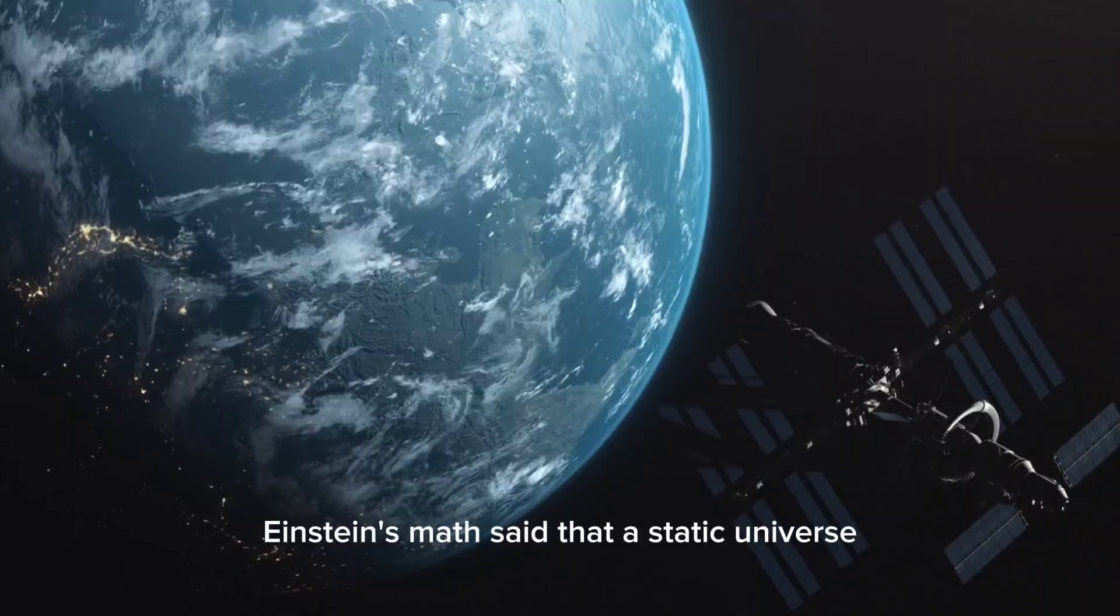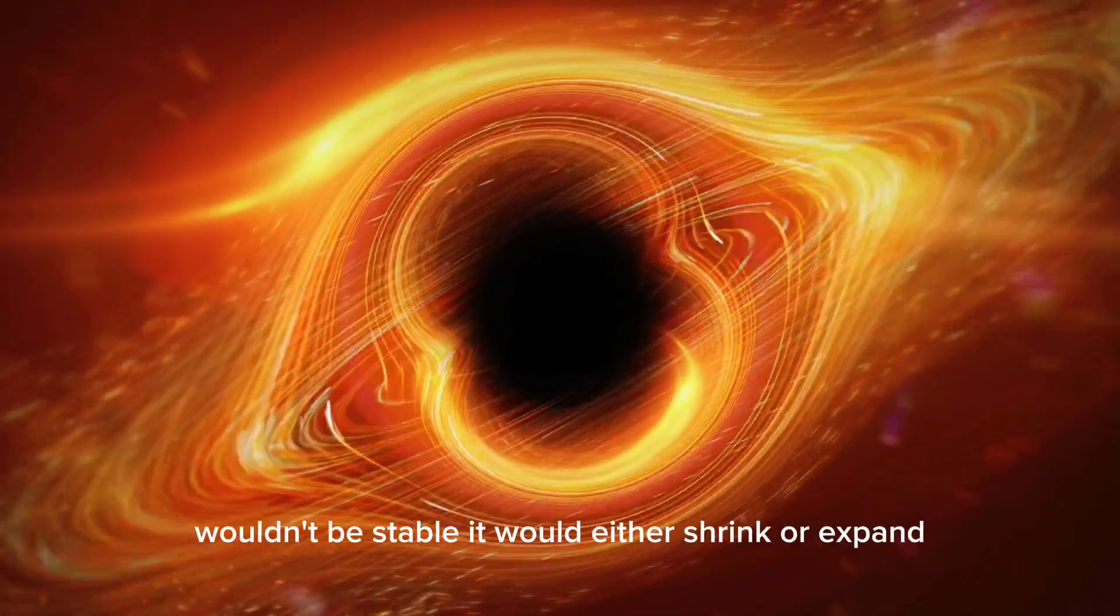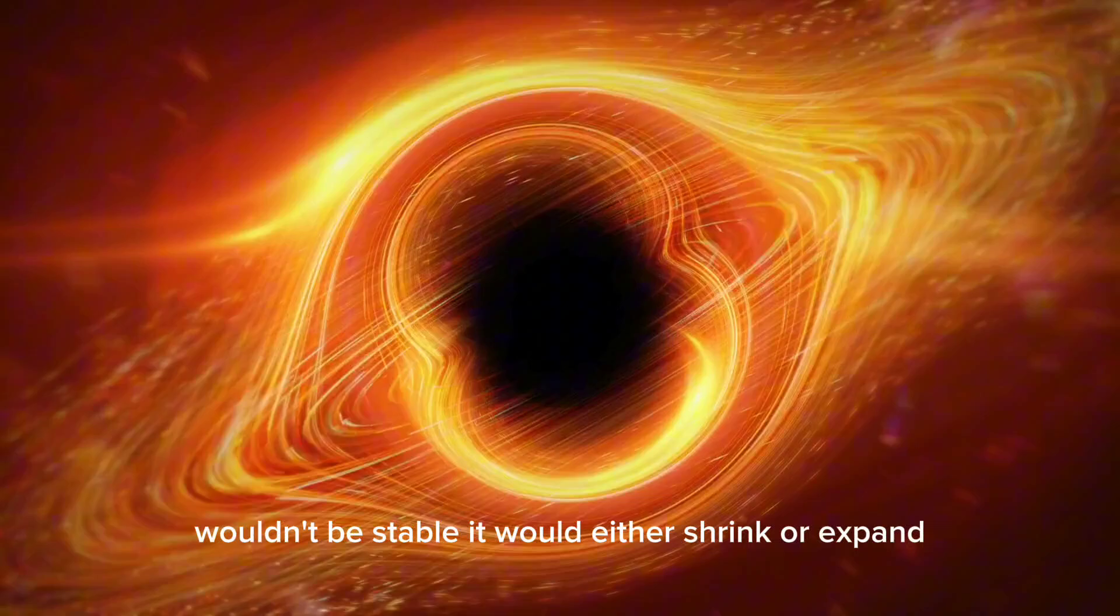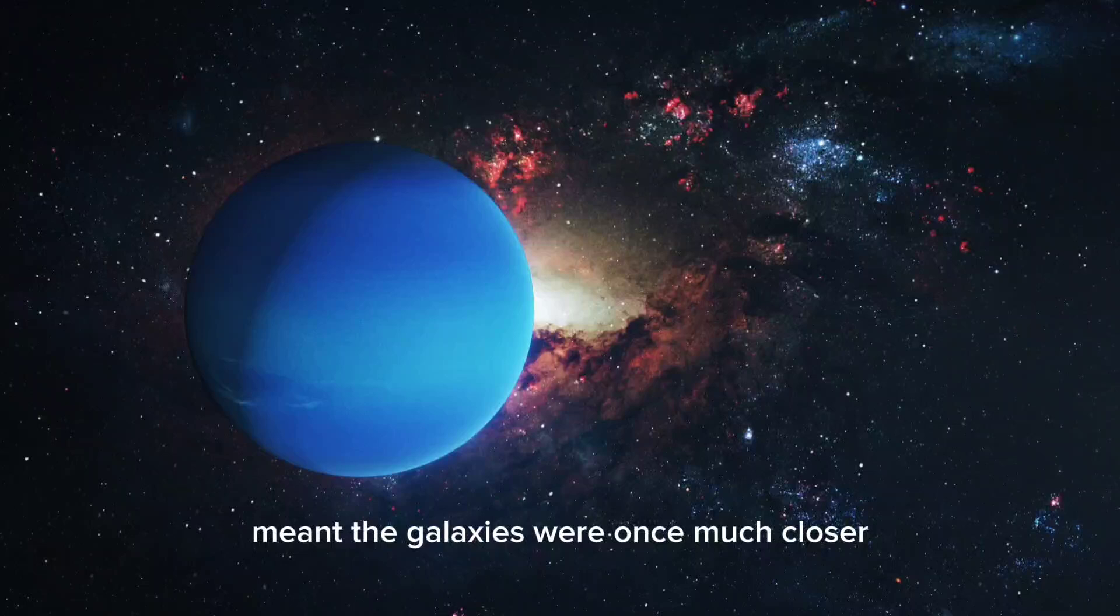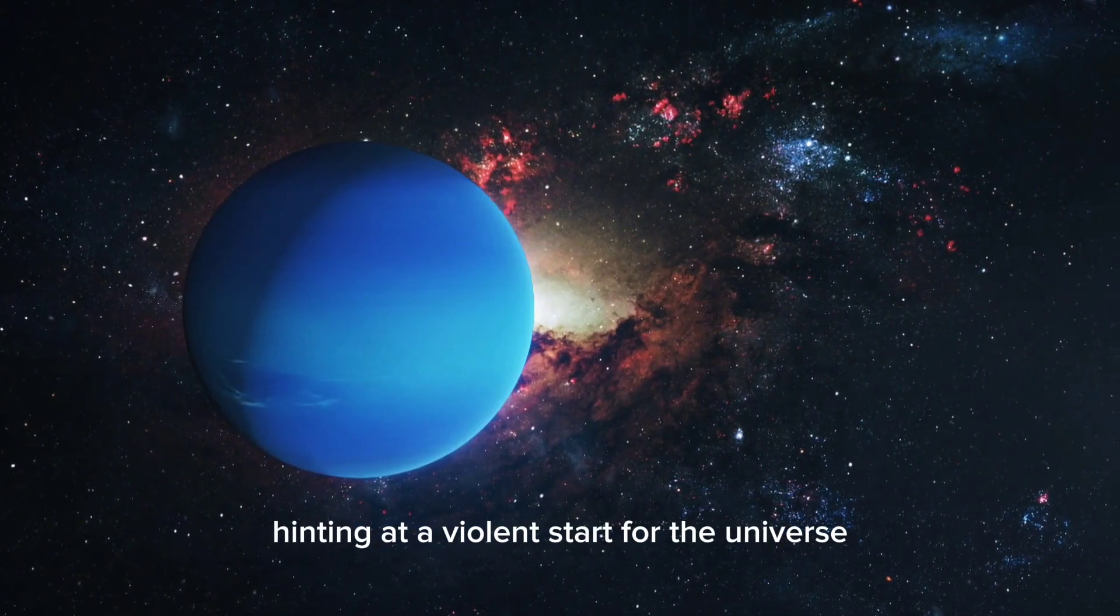Einstein's math said that a static universe wouldn't be stable. It would either shrink or expand. The fact that we see expansion meant the galaxies were once much closer, hinting at a violent start for the universe.